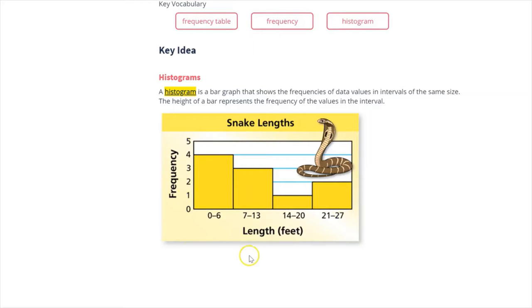And then the frequency is telling us, of these snakes that were measured, four snakes were 0 to 6 feet long, three snakes were 7 to 13 feet long, one snake was 14 to 20 feet long, and two snakes were 21 to 27 feet long.